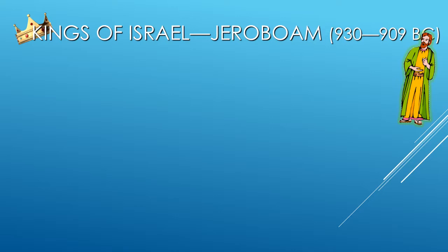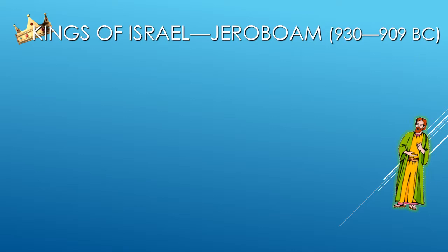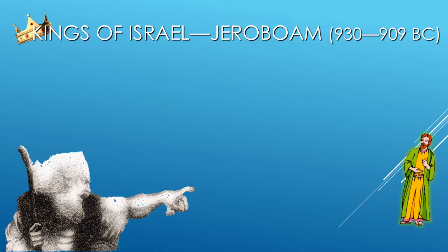When Jeroboam went out of Jerusalem, the prophet Ahijah the Shilonite found him on the road. Ahijah had dressed himself in a new garment, and the two of them were alone in the open country. Then Ahijah laid hold of the new garment and tore it into twelve pieces. And he said to Jeroboam, 'Take for yourself ten pieces, for thus says the Lord, the God of Israel: Behold, I am about to tear the kingdom from the hand of Solomon and will give you ten tribes.'